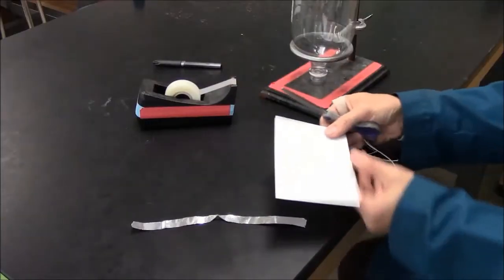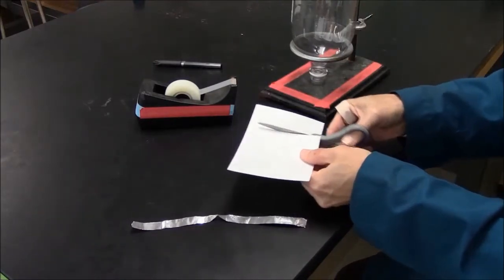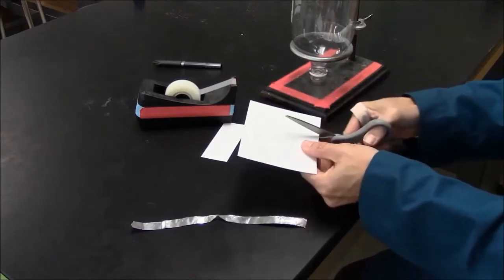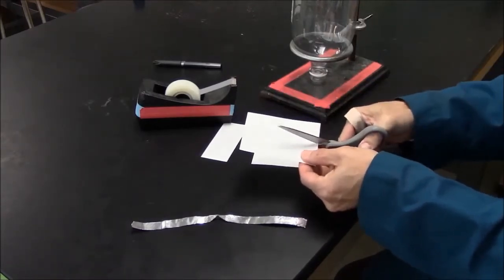I need a support for the aluminum foil. So this is an index card. I will cut into quarters and I need just one quarter of the index card to act as a support for the foil.